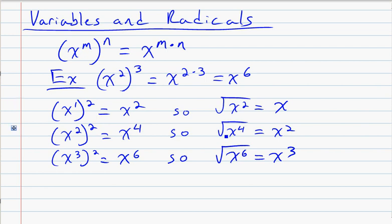You might see a pattern developing. It turns out to be a pretty simple rule. If you take a square root of a variable to an exponent and it's even, it's going to be a perfect square. To find the square root, you just divide the exponent in half. That's a simple application of the rule we discussed.